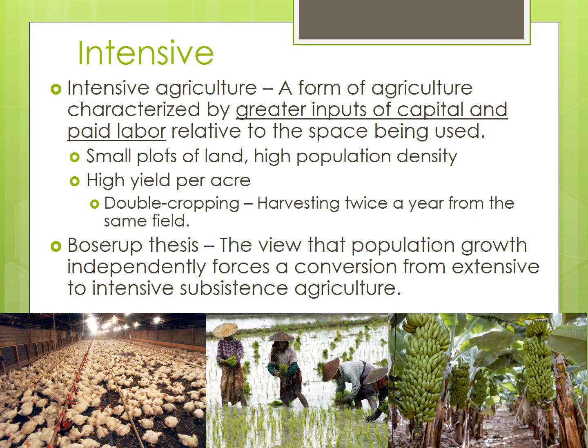Mixed crop and livestock is intensive because the crops, like corn and soybeans, are used as feed for the animals. The animals are then sold for meat, as that generates the maximum profit. But no part of the land is unused, which differentiates it from livestock ranching mentioned previously.